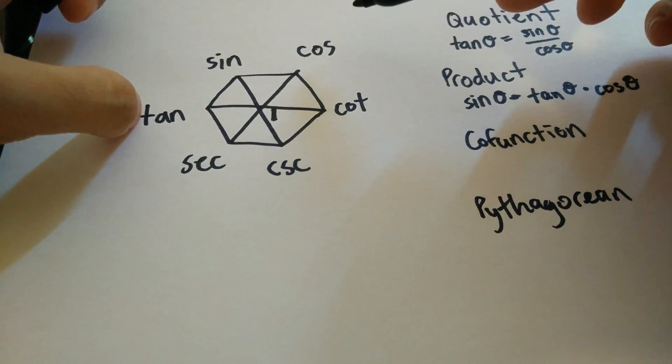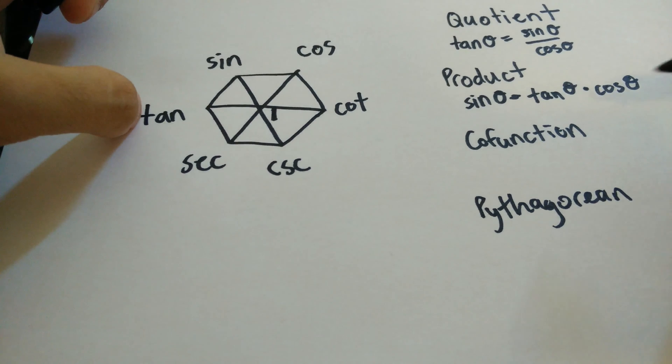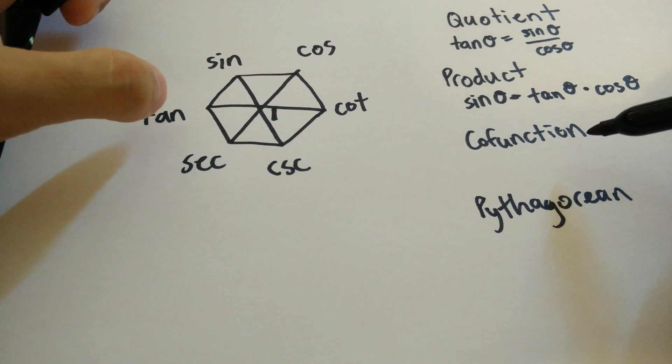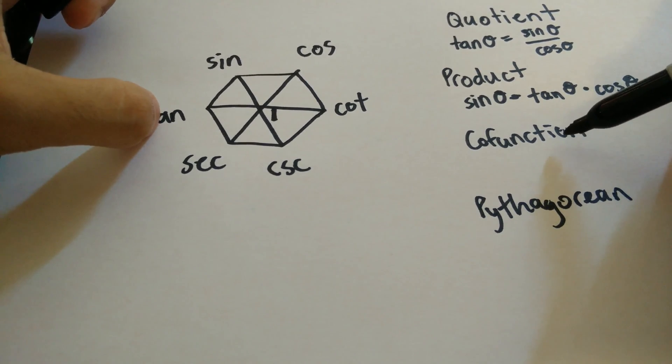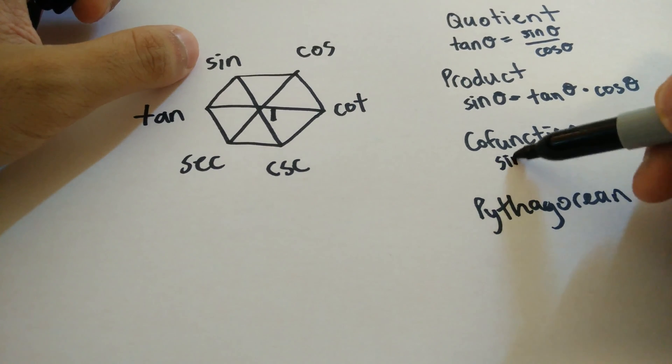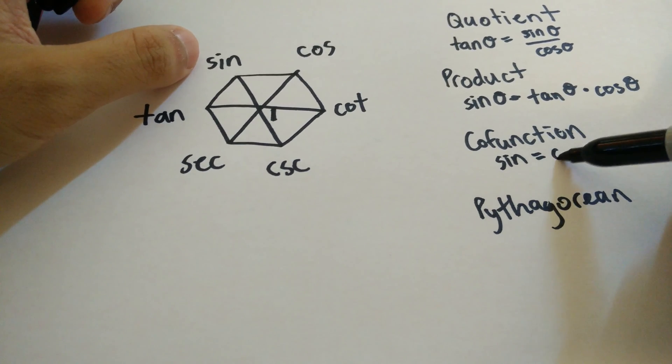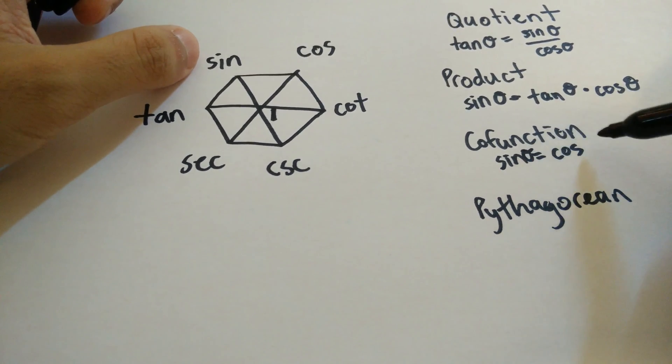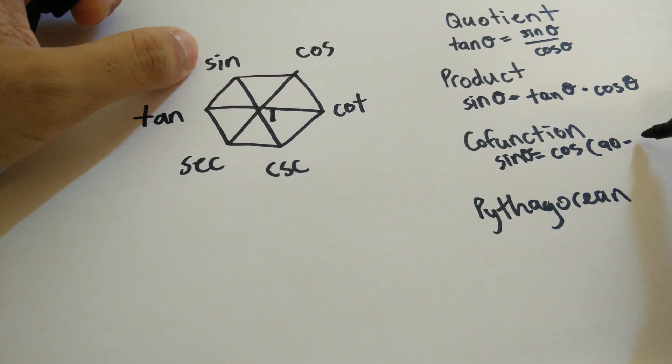1 is equal to secant times cosine. The next set of identities you can get from the magic hexagon are the cofunction identities. The cofunction identities simply state sine theta is equal to cosine of 90 minus theta.